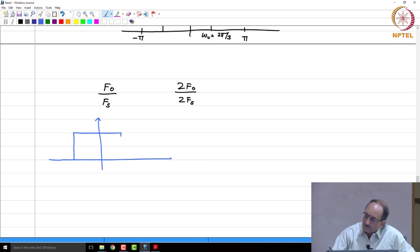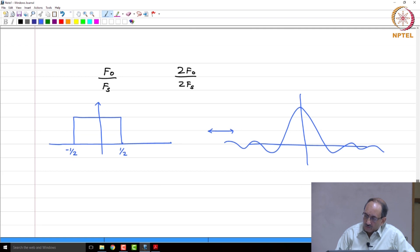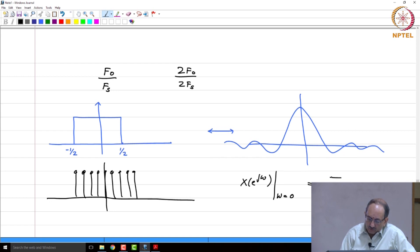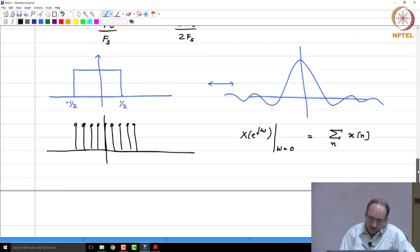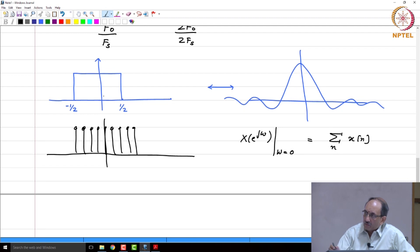Let us take this example. So, we have a signal like this, say between minus half and half, and then this has a spectrum. Now, we are going to sample this. And remember, x of e^(jω) at ω equal to 0 is nothing but this.